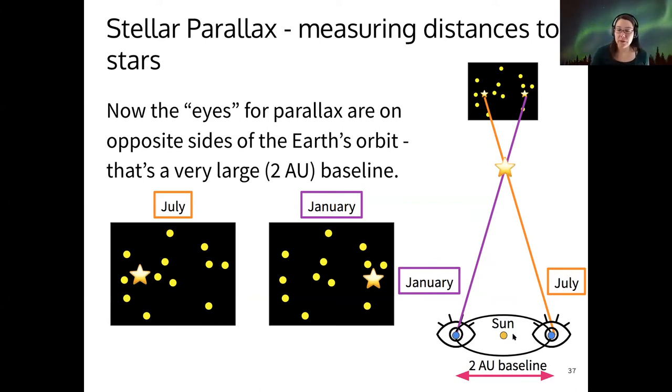And if you look at the image here, it's basically like a big triangle that we're constructing. So that suggests maybe we can use trigonometry to measure the distance to that nearby star. So that's what we do.